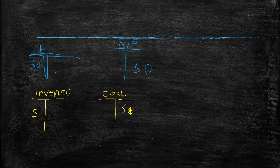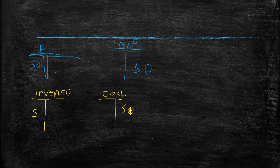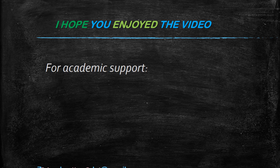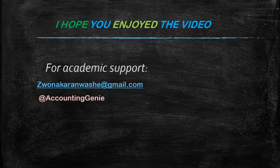So guys, this is basically how the debits and credits system works. Always remember: when assets decrease, they move towards the zero; when liabilities and equity decrease, they also move towards the zero. When they increase, they move away from the zero. Hence, our owner's equity and liability increase on the right side, which is the credit side, and our assets increase on the left hand side, which is our debit side. I hope you enjoyed this video — do leave some comments, and I will see you on the next video.